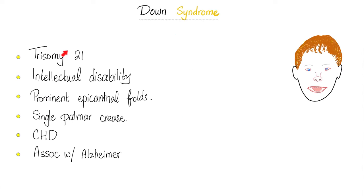Down syndrome is a trisomy. Instead of having 46 chromosomes, now you have 47 chromosomes. The extra chromosome is found at chromosome 21. So normally, if you look at the 21st chromosome, you'll find two copies — one from mom and one from dad — but in Down syndrome, you find three copies of chromosome 21.